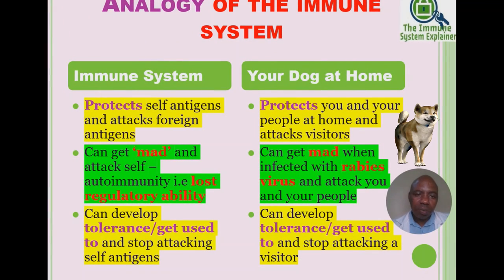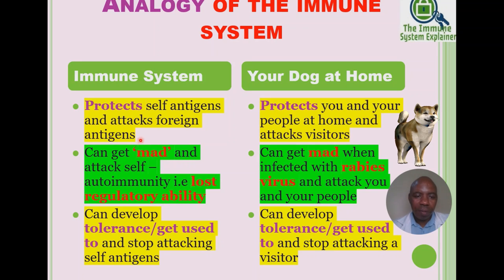An important analogy: your immune system compares to a dog at home. The immune system protects self-antigens and attacks foreign antigens — your own cells are protected, while microorganisms like bacteria, viruses, and fungi are attacked. Similarly, your dog protects you and your household members while attacking outside visitors.